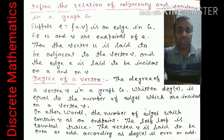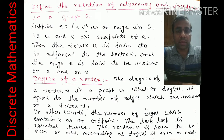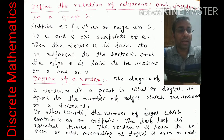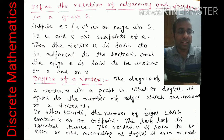Next we define adjacency and incidence, which play an important role in defining the degree of a vertex. Suppose edge e = (u, v) in G, meaning u and v are endpoints of edge e. Then vertex u is said to be adjacent to vertex v, and the edge e is said to be incident on both u and v.